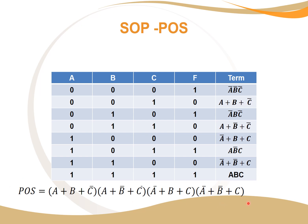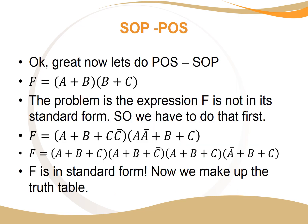To summarize: SOP uses the unique term making the output one; POS uses the unique combination of variables making the term zero. Now we look at doing POS to SOP. We have a POS expression, but there's a problem — it's not in standard form. Counting variables, we have A, B, and C, so there must be three variables in all terms, but some terms only have two.